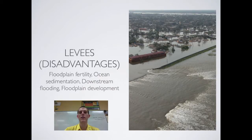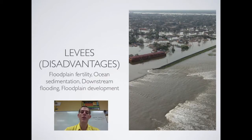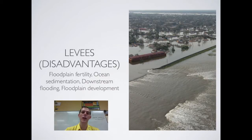If you build a levee to prevent annual flooding, that soil will eventually lose its nutrition. Also, you get sedimentation in the ocean because the sediment can't be deposited onto the flood plain — it's carried downstream and dumped into the ocean. In the Gulf of Mexico, farms along the Mississippi River have erosion that carries pesticides and chemicals into the river, which then deposits them into the ocean causing a dead zone. Levees can also cause downstream flooding, as excess water that would have spread onto the flood plain is instead carried downstream.